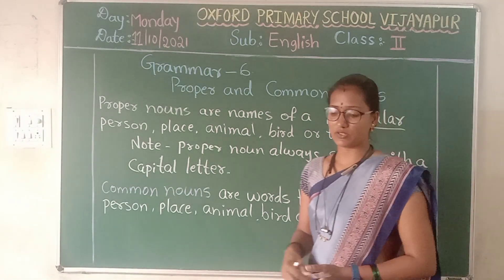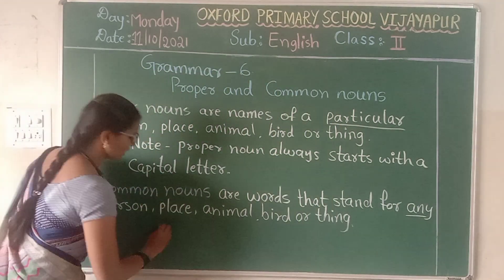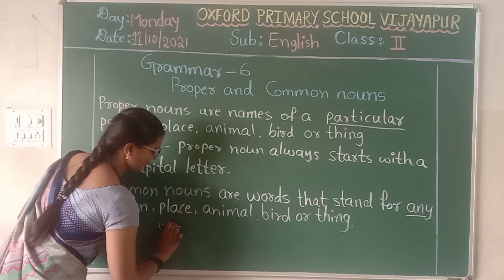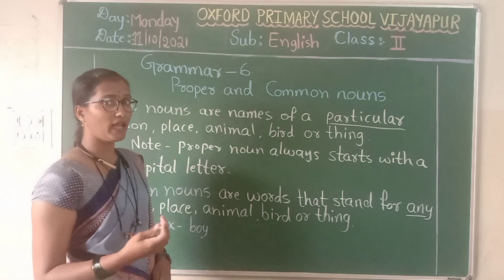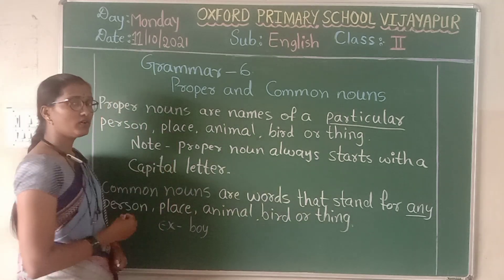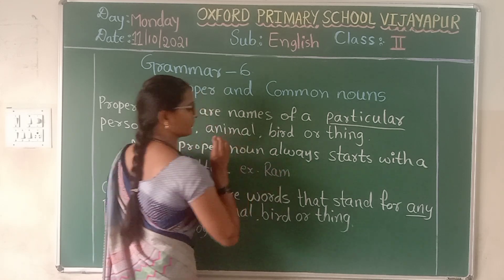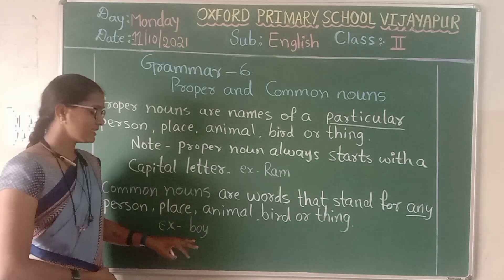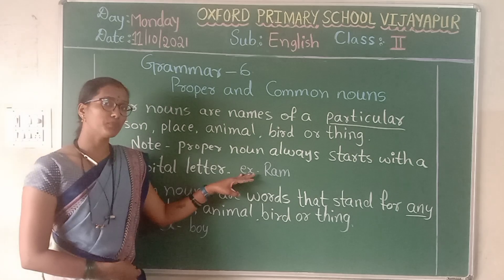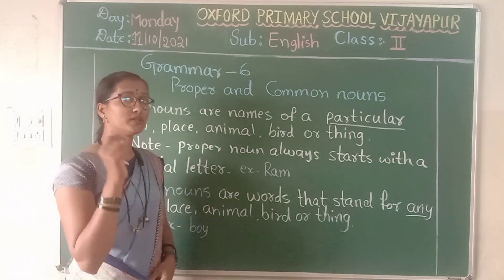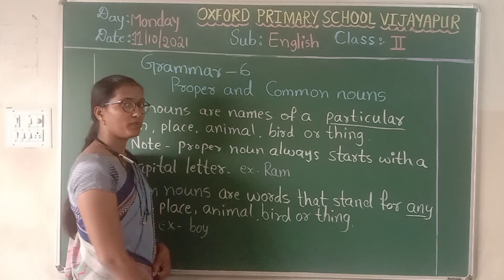I will give you an example so you will understand in a better way. For the common noun, the example is 'boy' — it can be any boy. For the proper noun, if I make the same example, I will write 'Ram.' Boy is a common noun — it can be any boy among you. Ram is a particular boy, a special name given to that boy, so Ram is a proper noun.